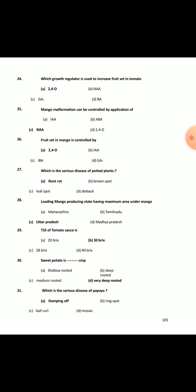Twenty-third question: which banana cultivar is used for chips making? The Nendran variety is used for chips making. Twenty-fourth question: which growth regulator is used for increased fruit set in tomato? 2,4-D at 1 ppm is used as a hormone for fruit set.